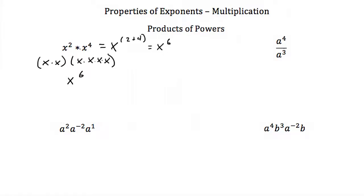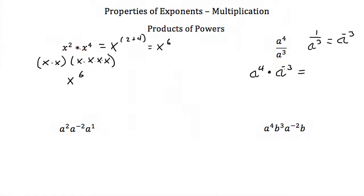Here we have a to the fourth divided by a to the third. Since it's in the denominator, we rewrite a to the third as a to the negative third. So what we have is a to the fourth times a to the minus 3. When we multiply two numbers with the same base you add the exponents, so this is a to the fourth plus negative 3, or a to the first.